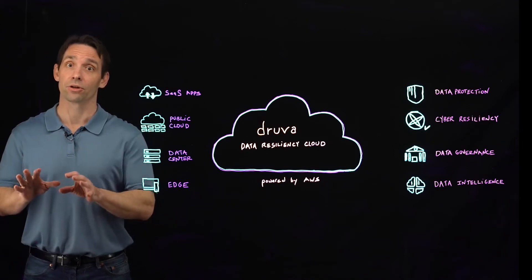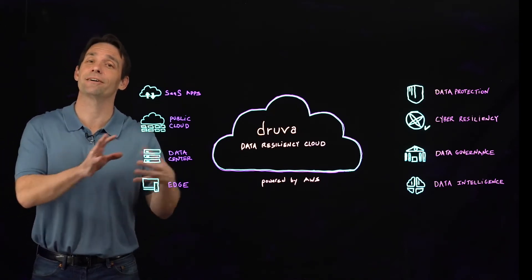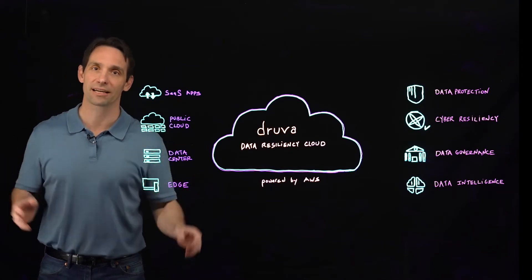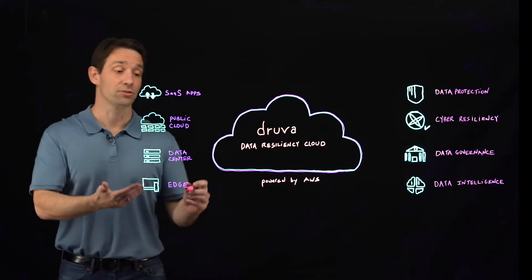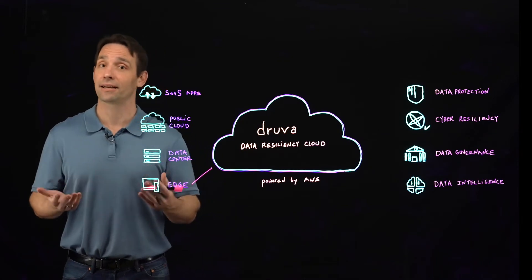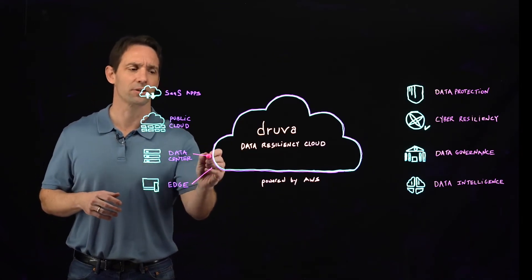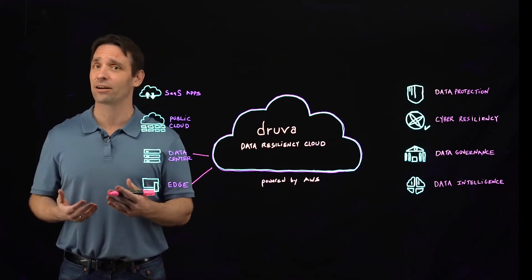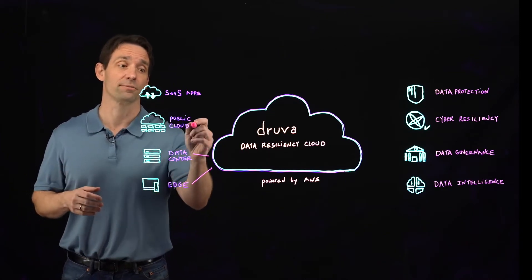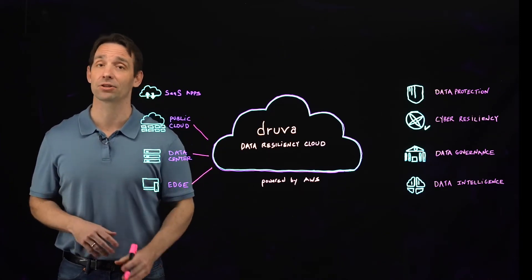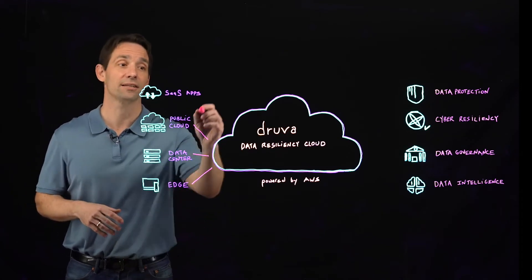First, you need to shift from an appliance-centric architecture to a cloud-native architecture so you can protect all your workloads. That includes the edge such as endpoints, data center, virtual machines, databases, file servers, public clouds such as AWS, Google, and Azure, and of course SaaS applications like Microsoft 365, Google Workspace, and Salesforce.